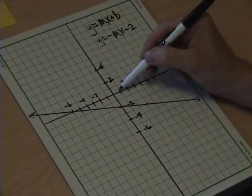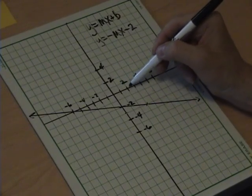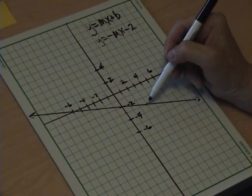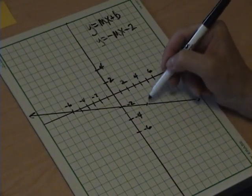So, we find this point, and where is that? That is counting x first, 1, 2, 3, 1, 2, 3. So, that is 3, negative 3.